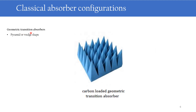Next are Geometric Transition Absorbers. They usually consist of carbon-loaded low-density foam having a geometric transition from free space into a low-epsilon medium. The geometric shapes are usually pyramids or wedges made up of rubber or plastic foam loaded with electrically lossy carbon material. These types of absorbers are usually used to construct anechoic chambers for microwave measurements.